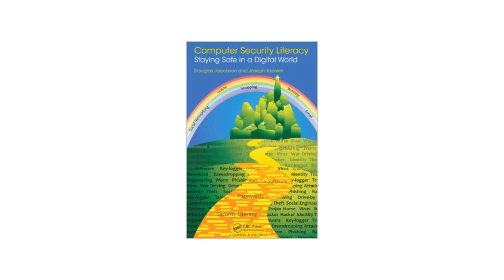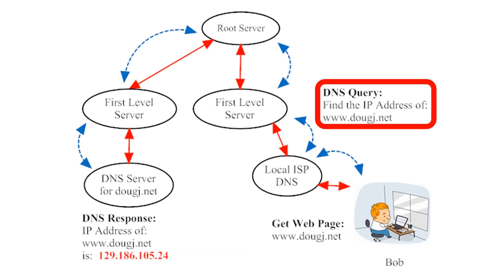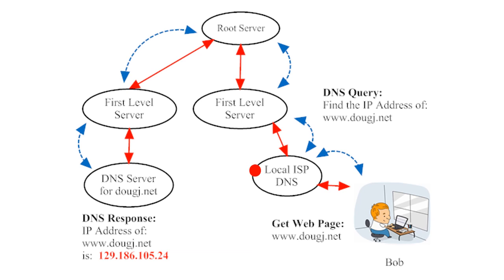I'm going to use a couple of illustrations from this textbook to show you what that looks like. This illustration helps us to see how domain name services work. In this illustration, Bob wants to visit www.dougj.net. When Bob submits the URL www.dougj.net into the address bar on his browser, his computer accesses a system called the domain name service, or DNS. Internet-capable computers have an application on board that allows them to access this domain name service. Bob's computer will send a request to the DNS server at his local internet provider, asking the DNS server: what's the IP address for dougj.net?